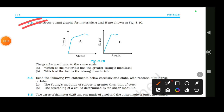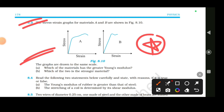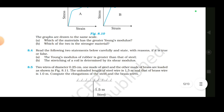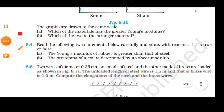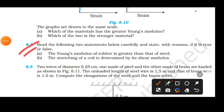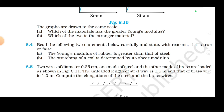You can solve these kinds of problems. An important MCQ point: the Young's modulus of rubber is greater than that of steel. Also, the stretching of a coil is determined by its shear modulus — this is important.